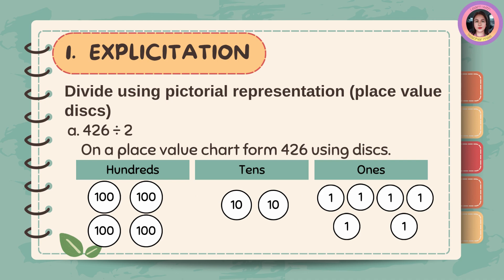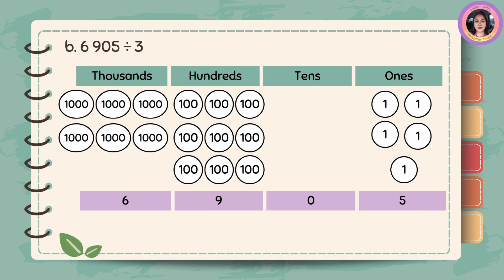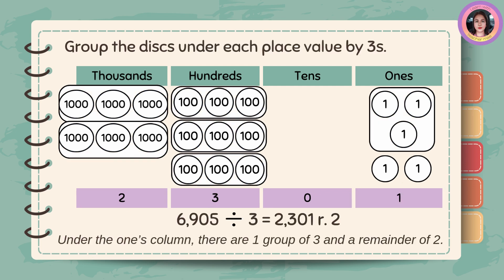Divide using pictorial representation with place value disks. For 426 divided by 2, on a place value chart, form 426 using disks. Group the disks under each place value by twos. For 6905 divided by 3, in a place value chart, form 6905 using disks. Group the disks under each place value by threes. Under the ones column, there is one group of three and a remainder of two.